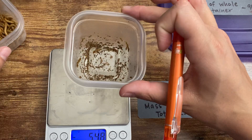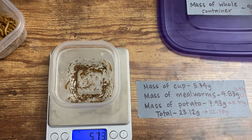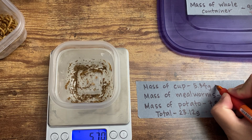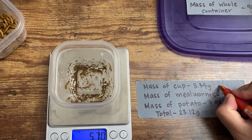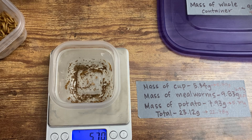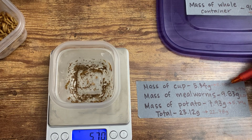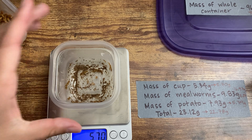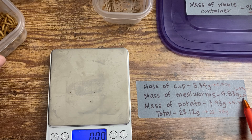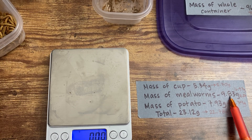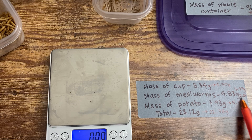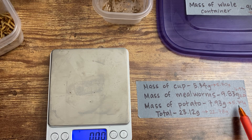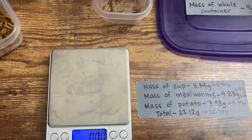The mass of the cup with the waste has gone up — because now there's poop in there — to 5.70 grams. Those are all my measurements. If you take 5.70 grams and subtract the mass of the cup, that gives you the mass of just the poop. Take the mass of the mealworms and subtract the original mass to find how much they gained. And take 5.79 and subtract 7.93 to find how much of the potato was eaten. You have everything you need to finish this lab.